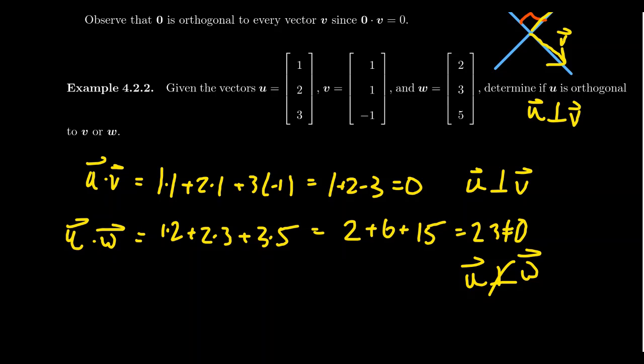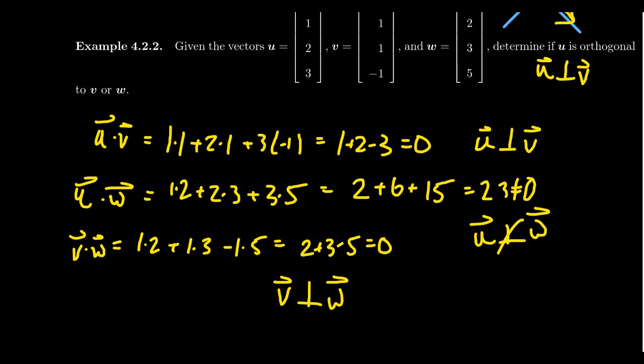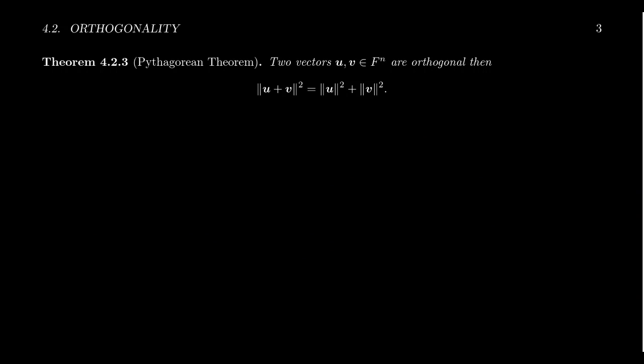If we do u and w, you're going to get 1 times 2 plus 2 times 3 plus 3 times 5. This is just a bunch of positive numbers—2 plus 6 plus 15 equals 23. That's not zero, so they're not orthogonal. Let's check if v is orthogonal to w. You get 1 times 2 plus 1 times 3 minus 1 times 5, so 2 plus 3 minus 5, which equals zero. That one turned out to be orthogonal as well.